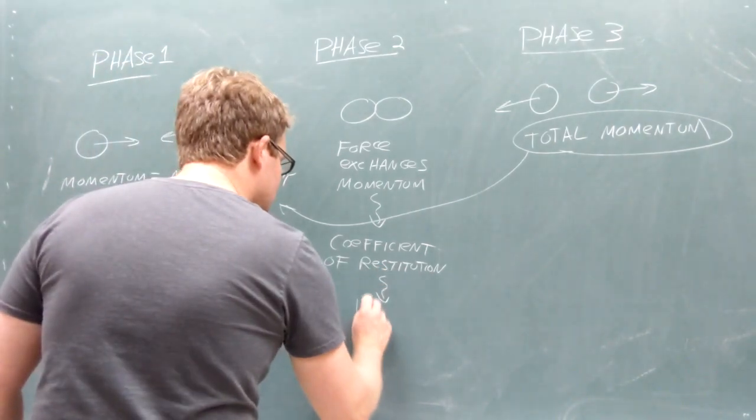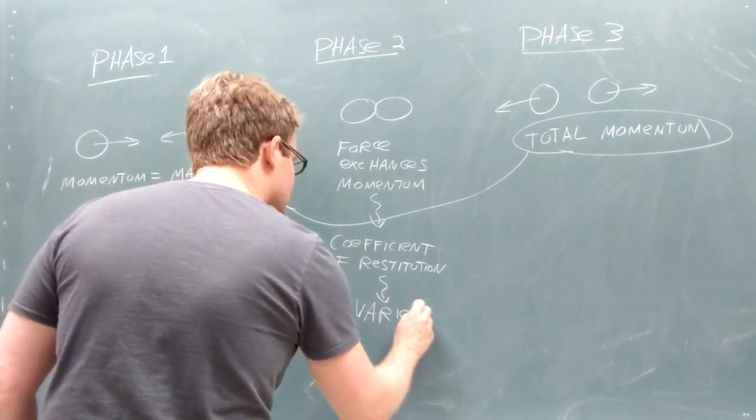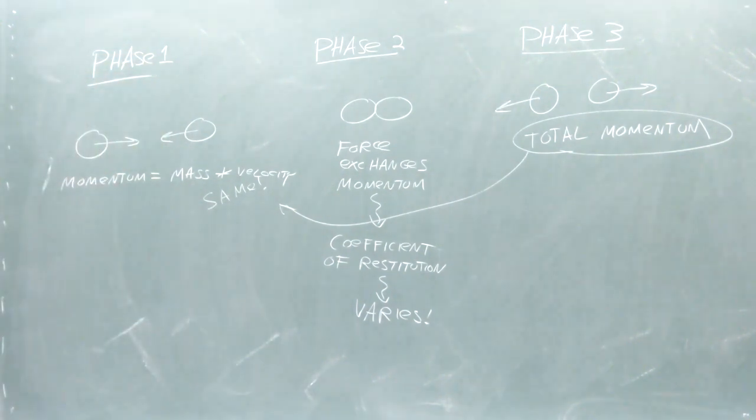When we study collisions, we use the coefficient of restitution as a measure of how much kinetic energy is lost during the interaction between the two colliders.